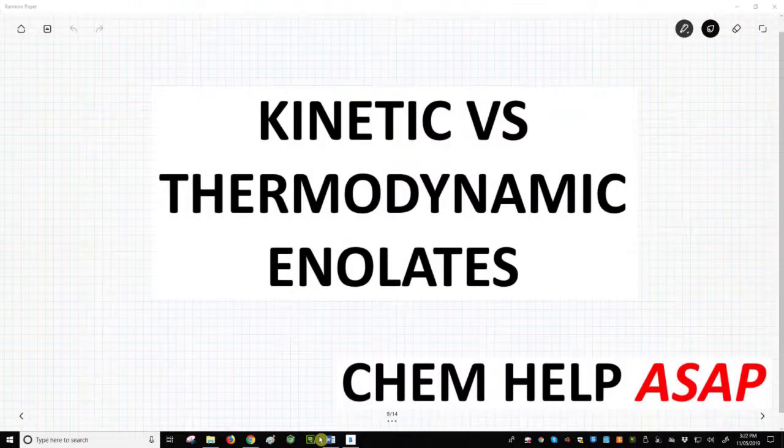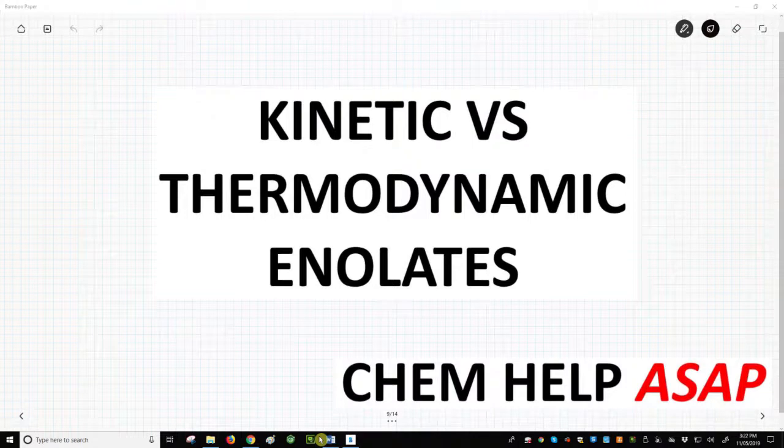Hello from ChemHelp ASAP. Enolates arise from removal of a hydrogen from an alpha carbon by a base.